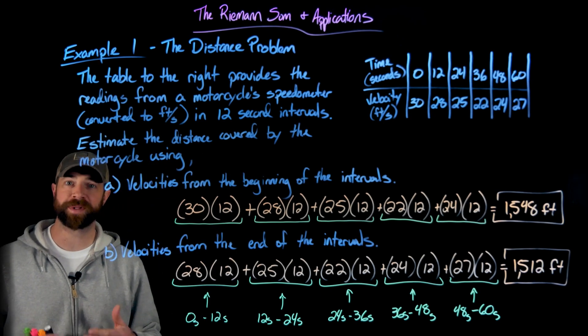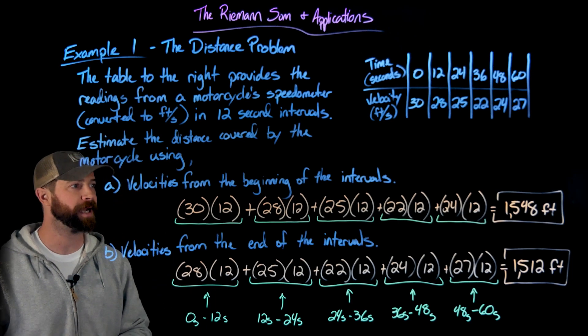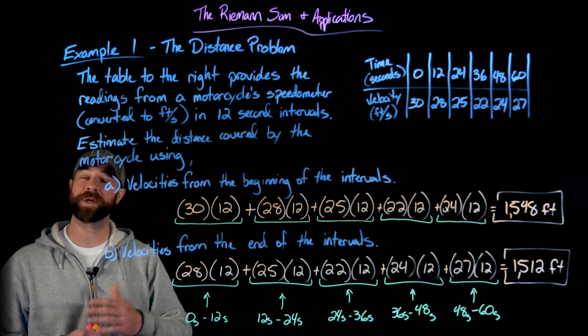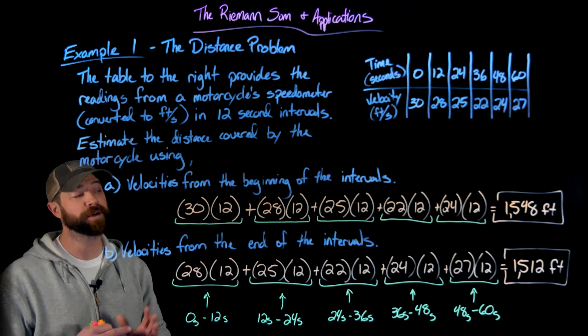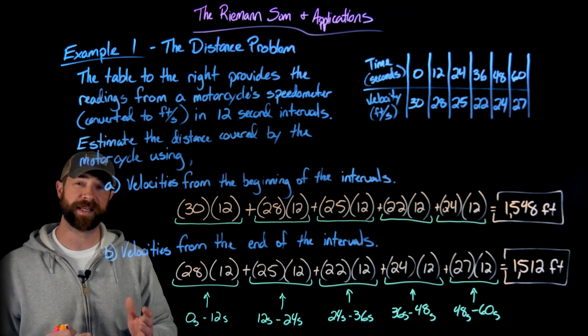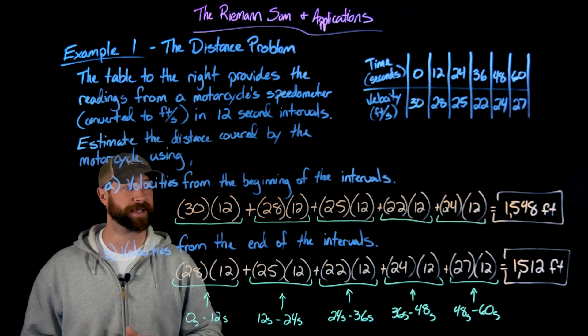And as spoken with the left endpoint and right endpoint approximations, which is exactly what this is, but now in a context, we have a range of values where we can safely assume that this motorcycle, as long as it didn't accelerate and decelerate too crazily in between these readings, we have a very good range for the distance traveled by this motorcycle.